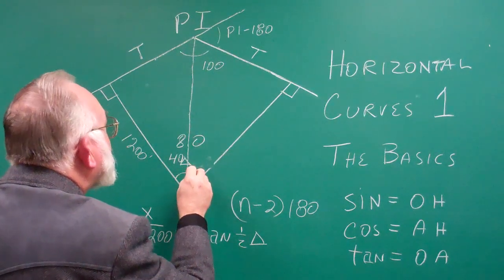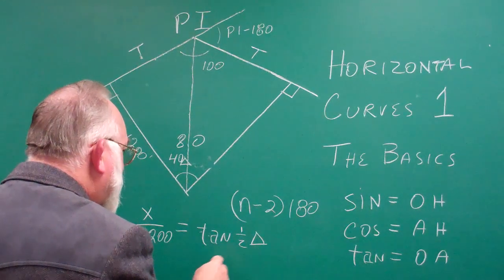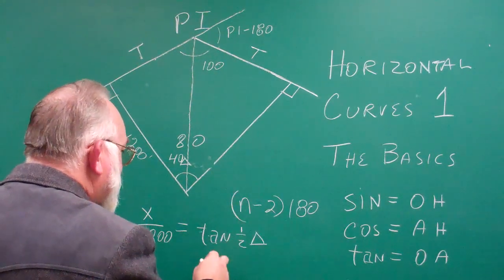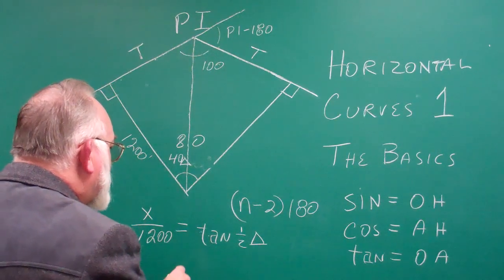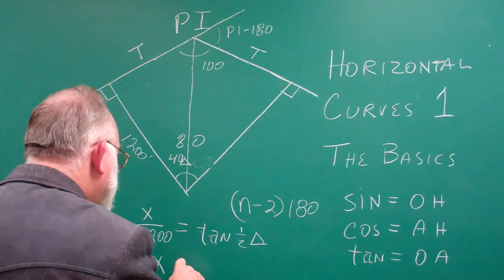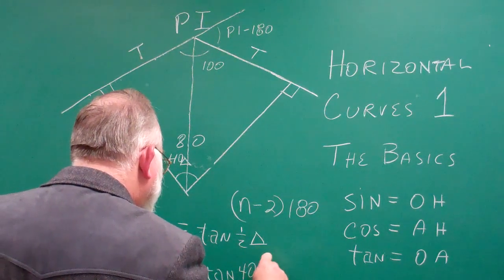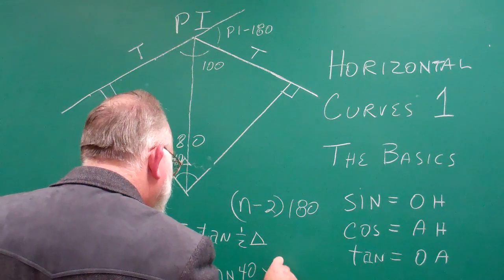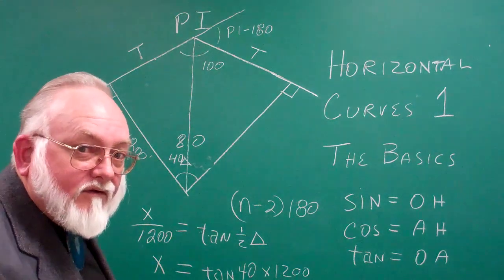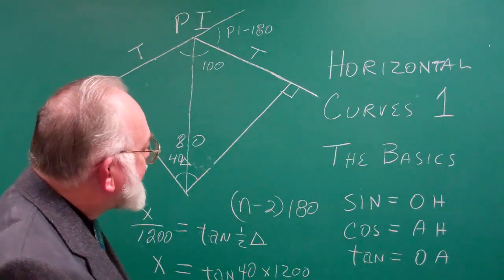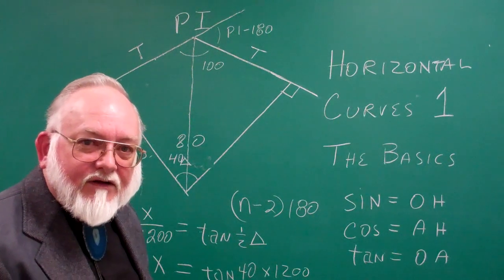So it's half of 80 degrees, which is 40 degrees, so half of 40, tangent of that, or the tangent of 40 degrees equals x over 1,200. So multiply and you've got that solved. We'll be back in a minute. This is about all the tape I can run at any given time with further explanations of the different parts of a curve.